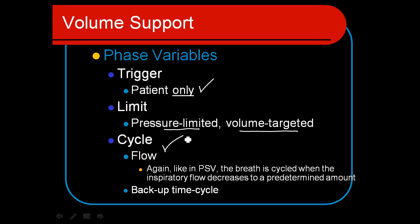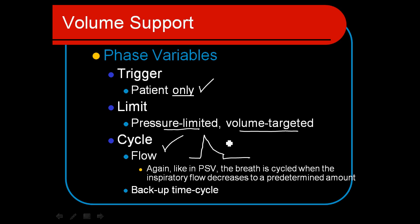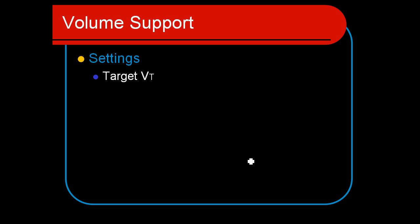Volume support is flow cycled, which is what makes this mode similar to pressure support. As the patient takes a big breath in with a large inspiratory flow, once that flow declines to a certain point the ventilator cycles into exhalation. That's what makes this a comfortable spontaneous mode, just like pressure support.